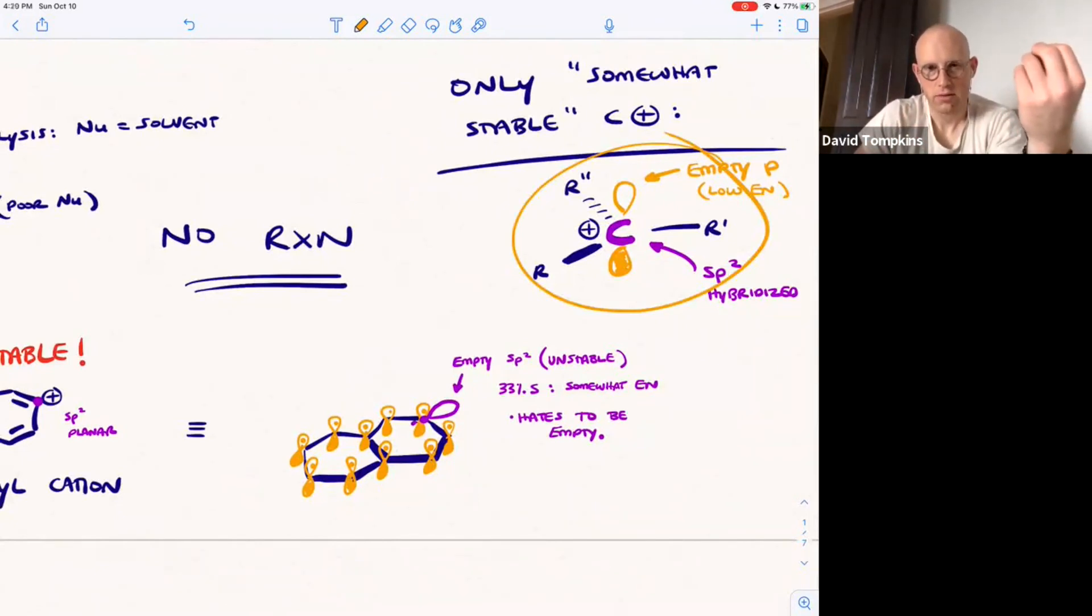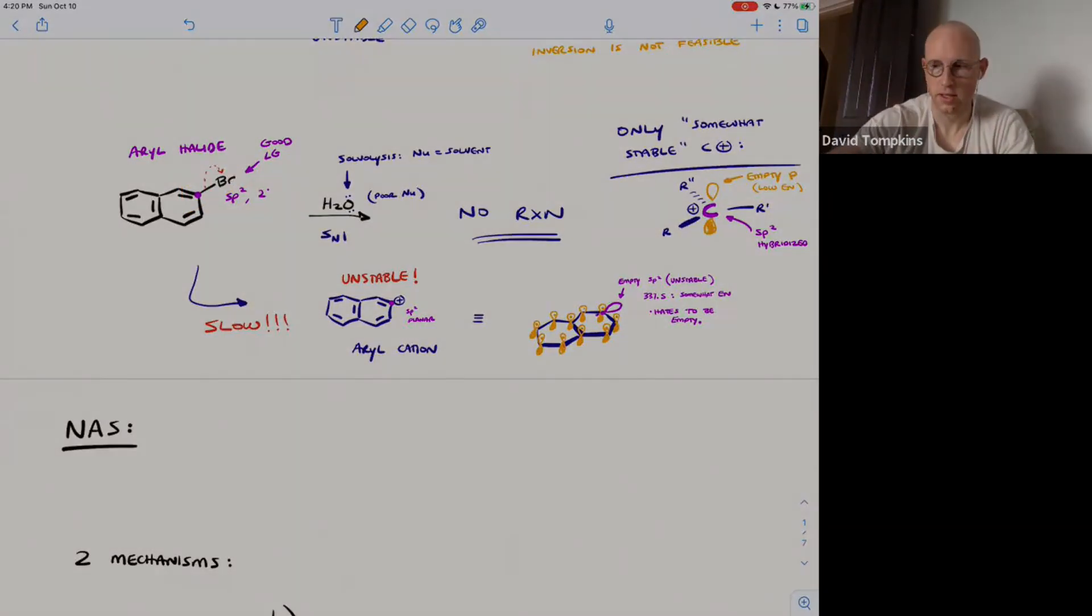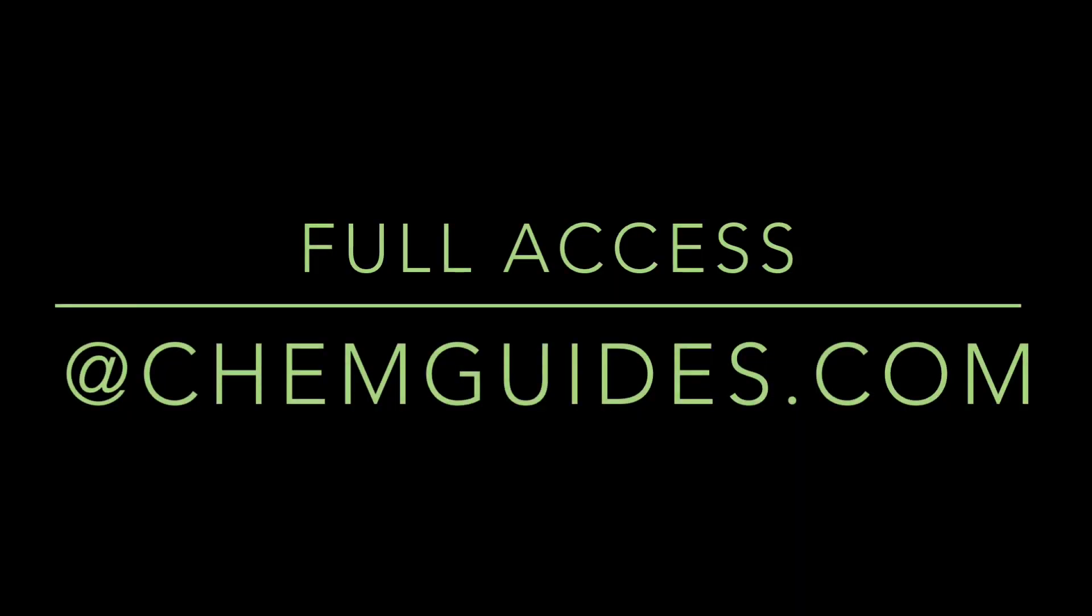The way that you get this carbocation, it's SP2, is by starting with a compound that's alkyl, or SP3. And when the leaving group leaves, it makes this cation. That's the carbocation we always saw and did reaction mechanisms with in ORGO1. But leaving groups on SP2 carbons will not undergo SN1 for this reason, or SN2 for the previous transition state reason we discussed.